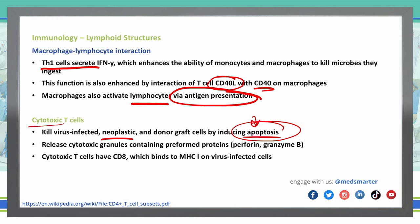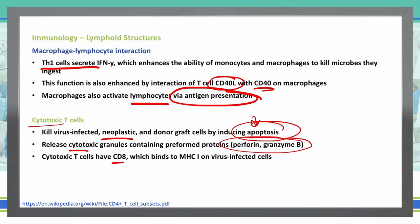How do cytotoxic T cells work? They release cytotoxic granules containing preformed proteins perforin and granzyme B. They have CD8 on their surface, and using the rule of eights, cytotoxic T cells bind to MHC class 1 on virus-infected cells.